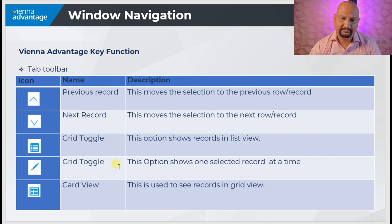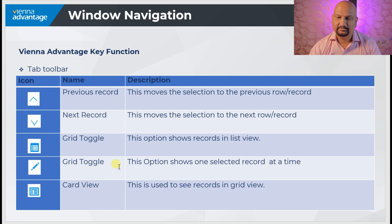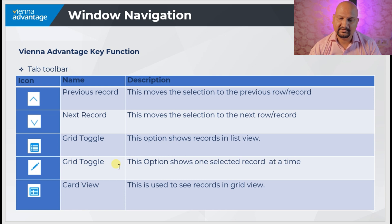At the top of the window there is a tab toolbar. You can click the arrow keys to move the selection to the previous or next record. Then we have the grid toggle, which shows records in a list view. Another grid toggle option shows one selected record at a time. Then we have the card view, which is used to see records in the card view.